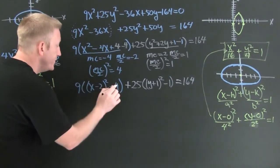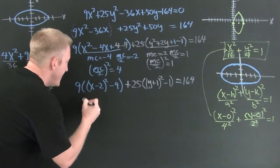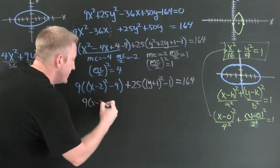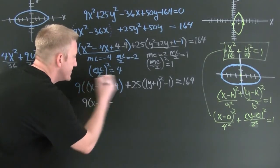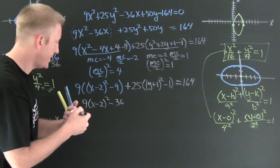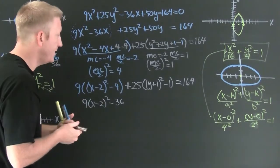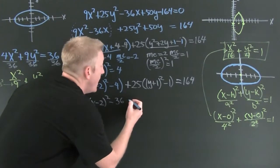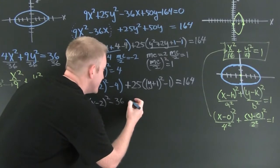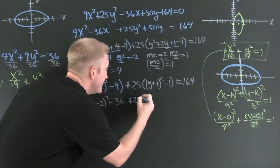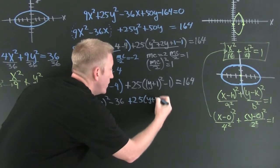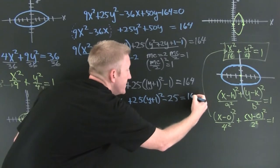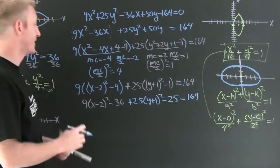And you'll have 9 times x minus 2 squared minus 36. And then I do the same thing here. This is gonna be plus 25 times y plus 1 squared minus 25 is equal to 164.